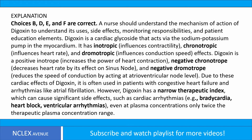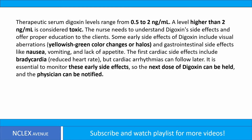Due to these cardiac effects, digoxin is often used in patients with congestive heart failure and arrhythmias like atrial fibrillation. However, digoxin has a narrow therapeutic index, which can cause significant side effects such as cardiac arrhythmias — e.g., bradycardia, heart block, ventricular arrhythmias — even at plasma concentrations only twice the therapeutic range. Therapeutic serum digoxin levels range from 0.5 to 2 nanograms per milliliter; a level higher than 2 nanograms per milliliter is considered toxic.